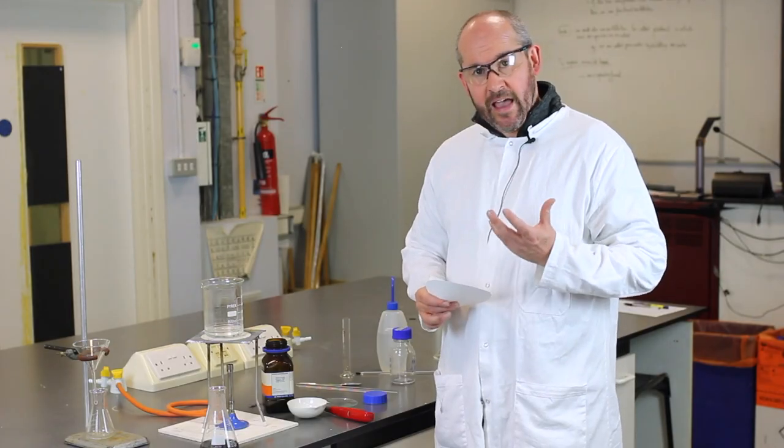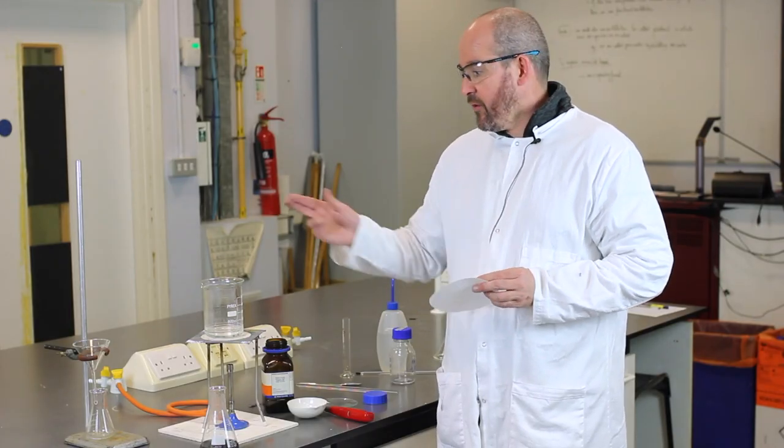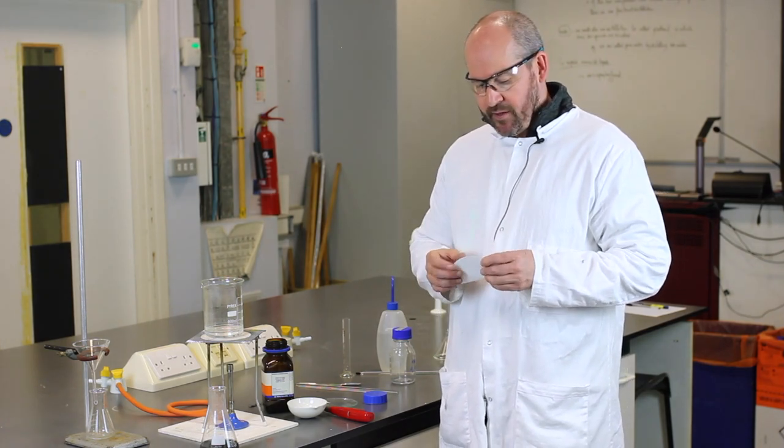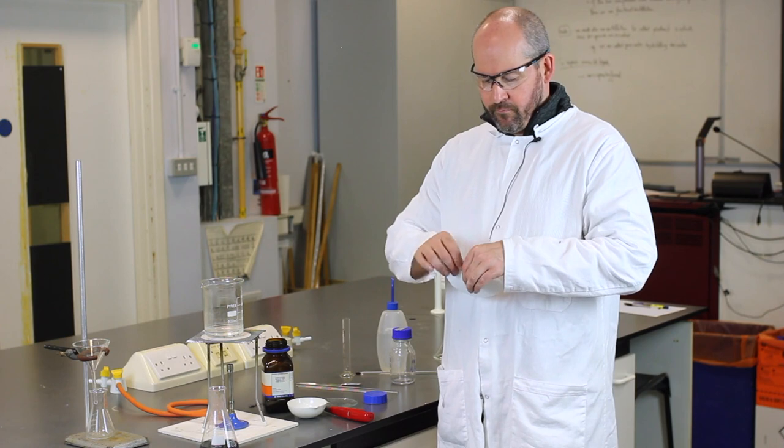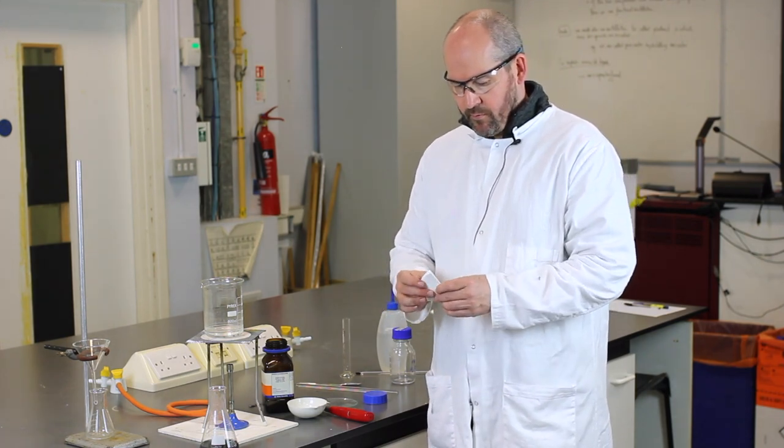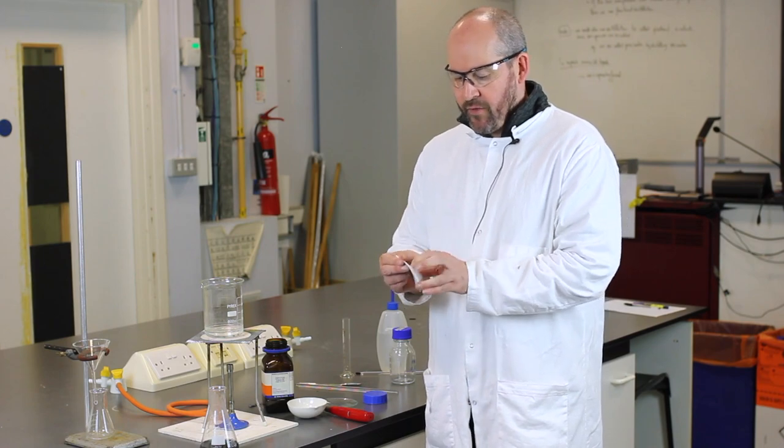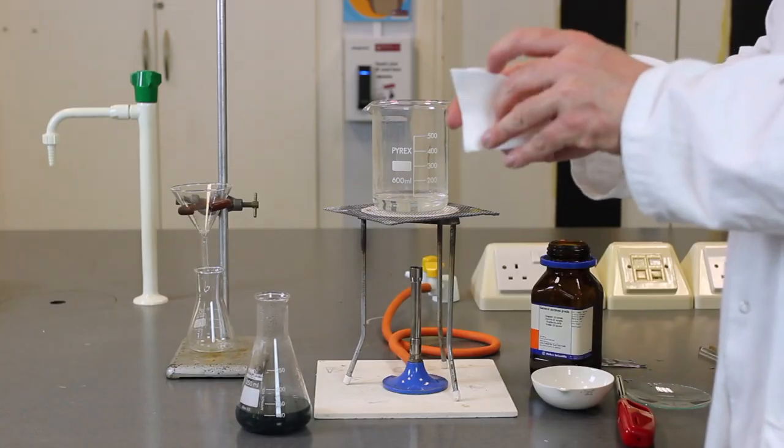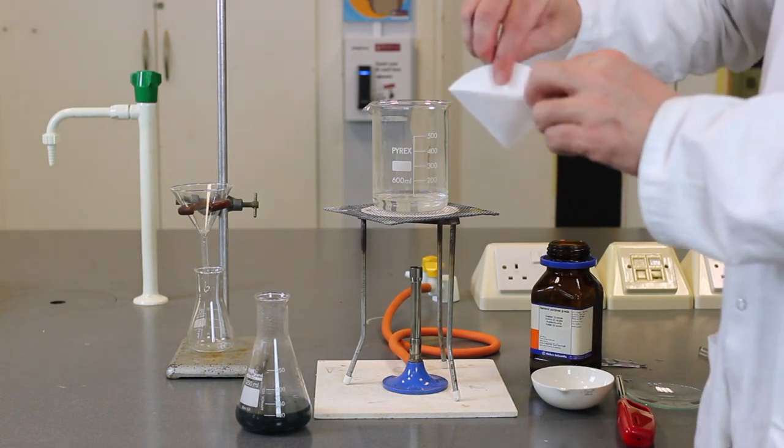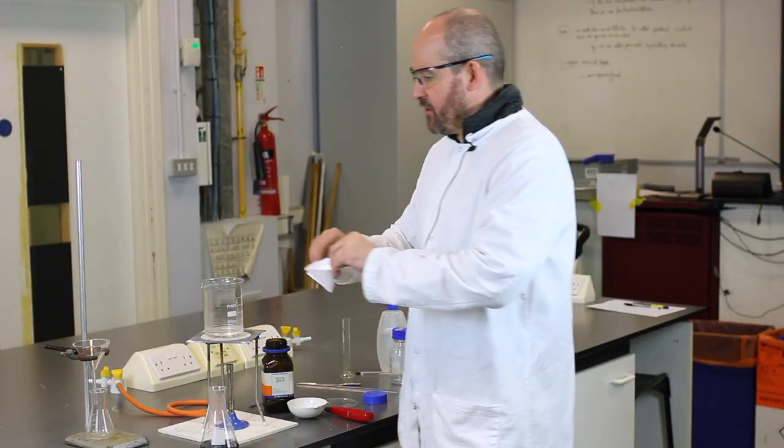So we're going to filter off the excess copper oxide using a funnel and the filter paper. So the first thing we do is we fold the filter paper into four, like so. And then we've got to form a cone of that type, like that. Then we open one of the leaves of the cone. So it looks something like this. We place it in the funnel.